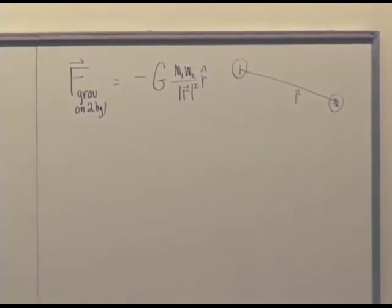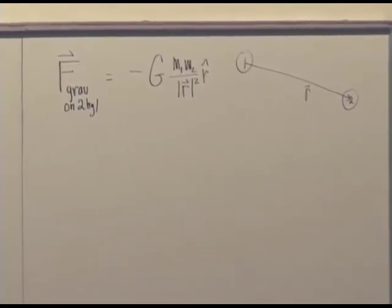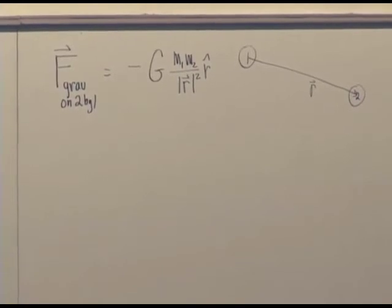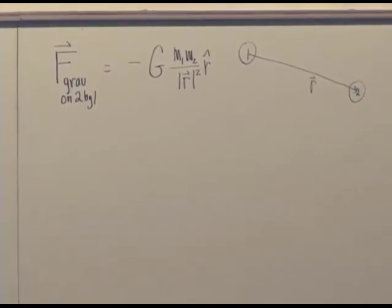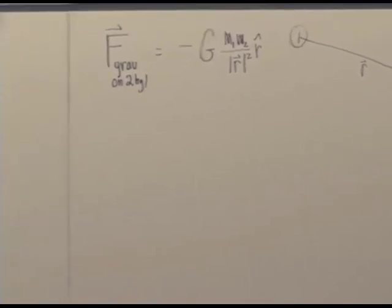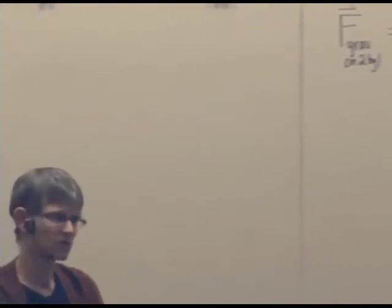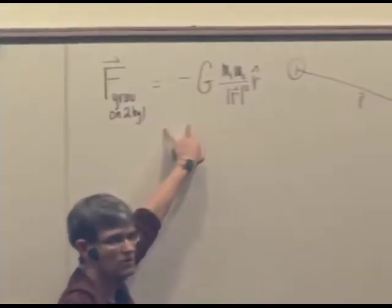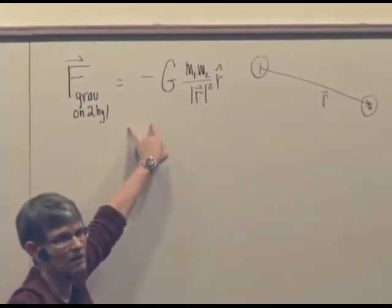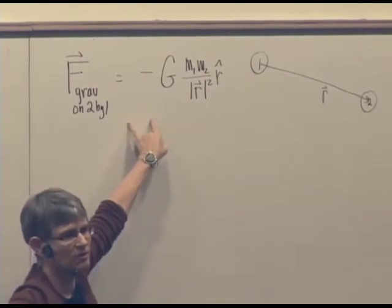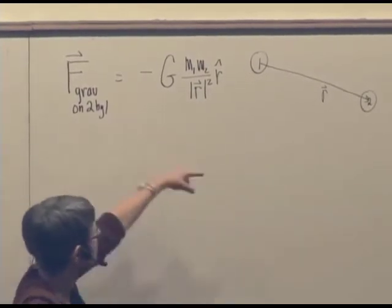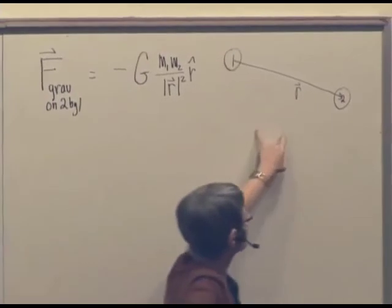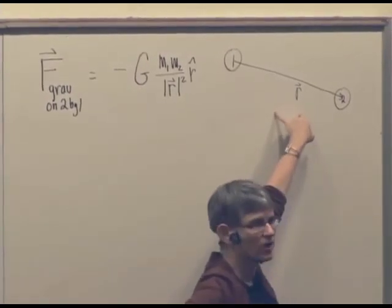Notice that there's nothing about other objects. And usually when there are gravitational interactions, there's more than two objects around. So the Earth is attracted to the sun, but it's also attracted to the moon and Mars and Venus and various other things. And one of the most important things about this equation is that those other objects don't appear in it. The interaction between these two objects is not changed by the presence of other objects.